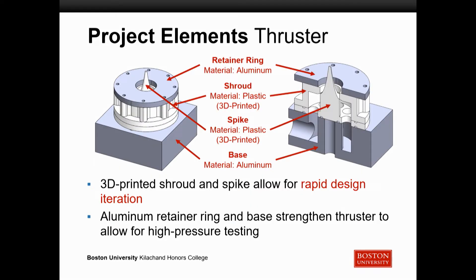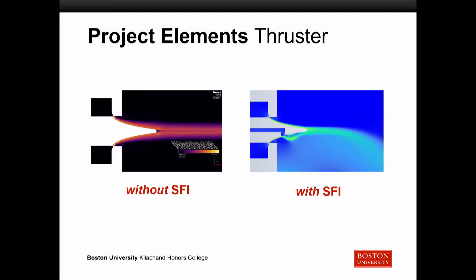On the thruster side, we have a device made up of four components: the retainer ring, the shroud, the spike, and the base. Two key design features: 3D printing the shroud and spike allowed us to rapidly iterate on our designs to arrive at an optimized design as quickly as possible, and making the retainer ring and base out of aluminum allowed us to do high-pressure testing, which is important to achieving the performance we need.